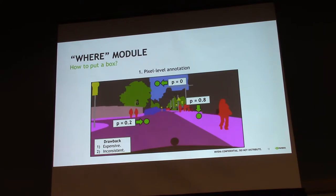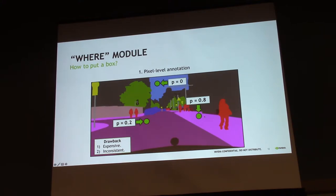Here's the main idea. Let's talk about how to insert an object and where to find a good place. One option is to annotate each pixel with a probability — for example, probability zero for a building pixel and 0.8 for a road pixel. But there are obvious drawbacks: it's expensive to annotate, and different users will assign different probabilities, so it's inconsistent. A second option is to leverage the fact that an object was already there — click an object, remove it, inpaint the hole, and say the original person's location is a good place to insert. But this approach relies on inpainting performance and inpainting algorithms always leave artifacts.